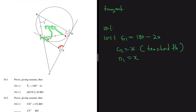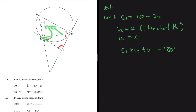So D1 also equals x. Now we can see that E1 plus C2 plus D1 should equal 180 degrees — the sum of angles in a triangle. We can find E1 by saying it equals 180 minus C2 minus D1, which are both equal to x, so E1 equals 180 minus 2x. That's how you find E1.